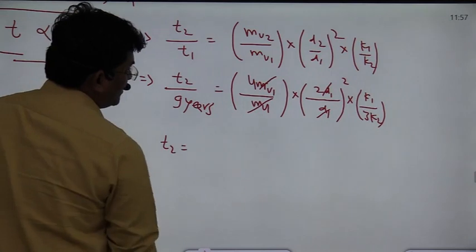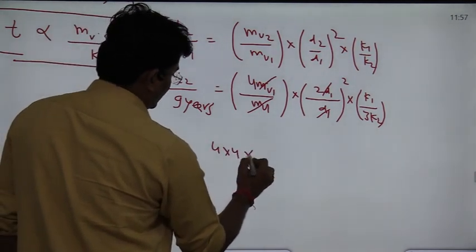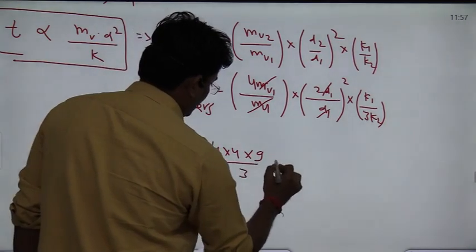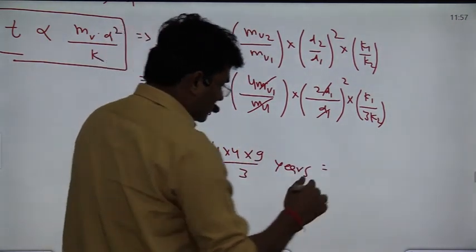The value of T2 is equal to 4 multiplied by 4 multiplied by 9 divided by 3 years. So that is equal to 48 years.